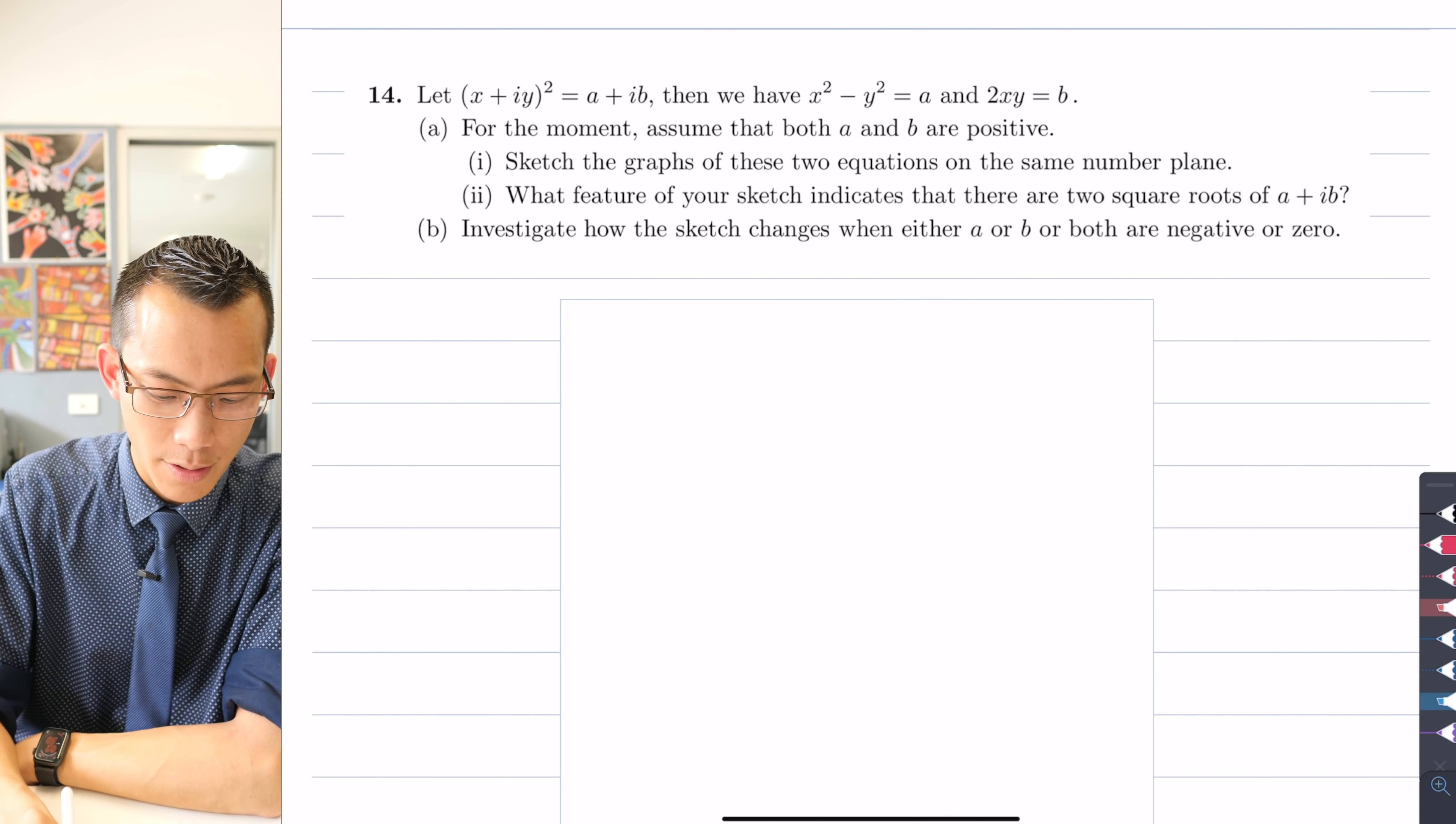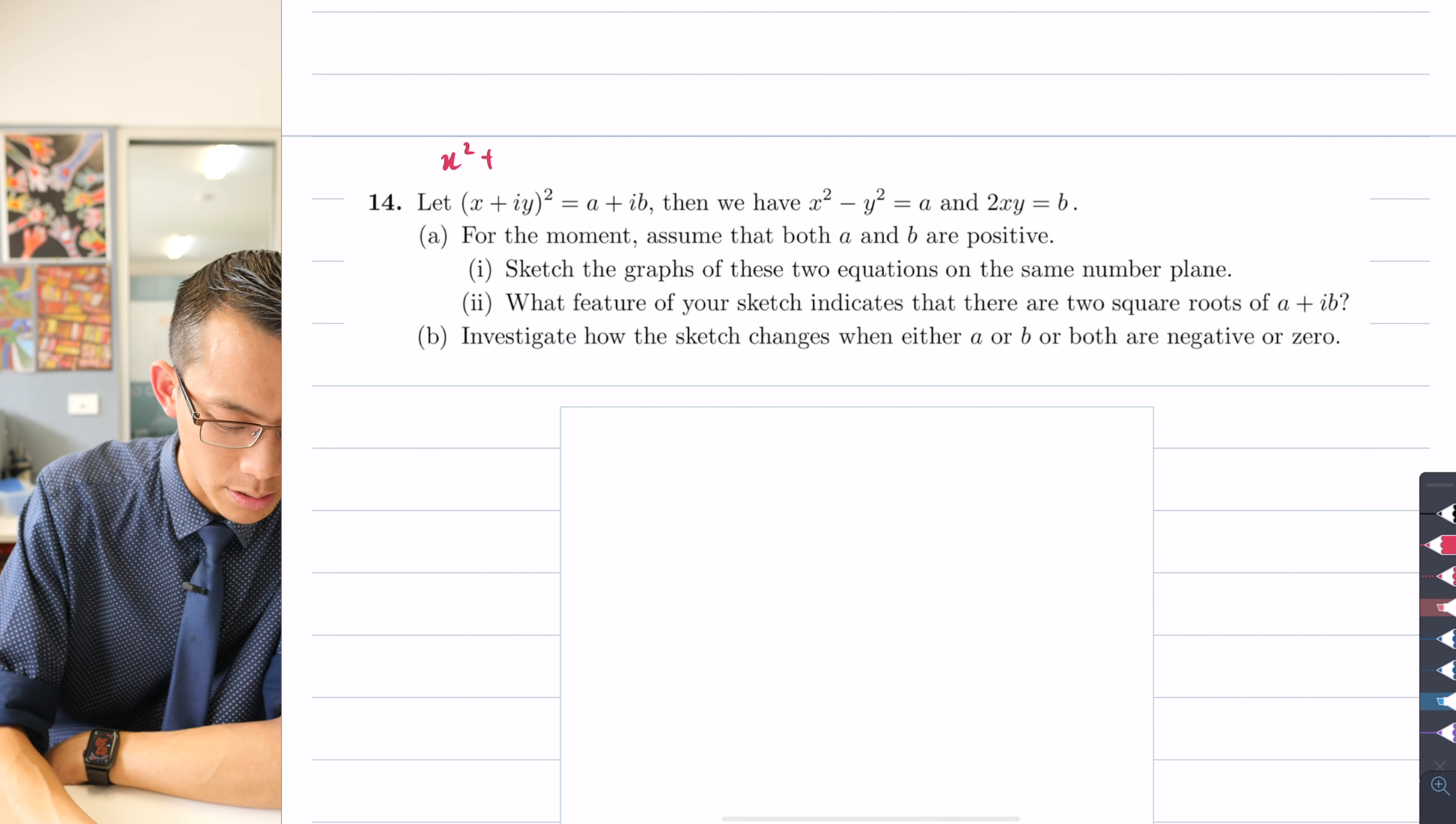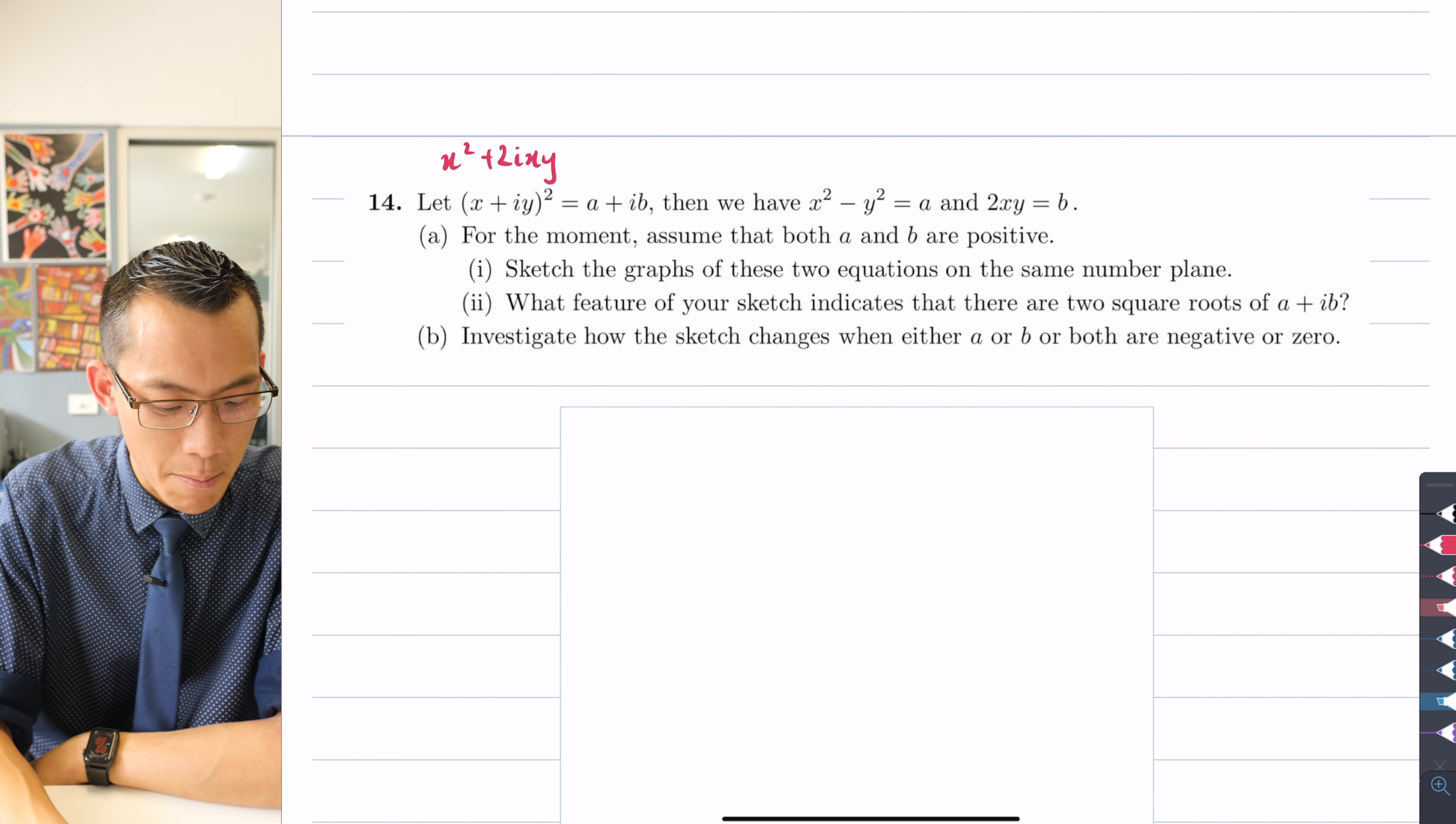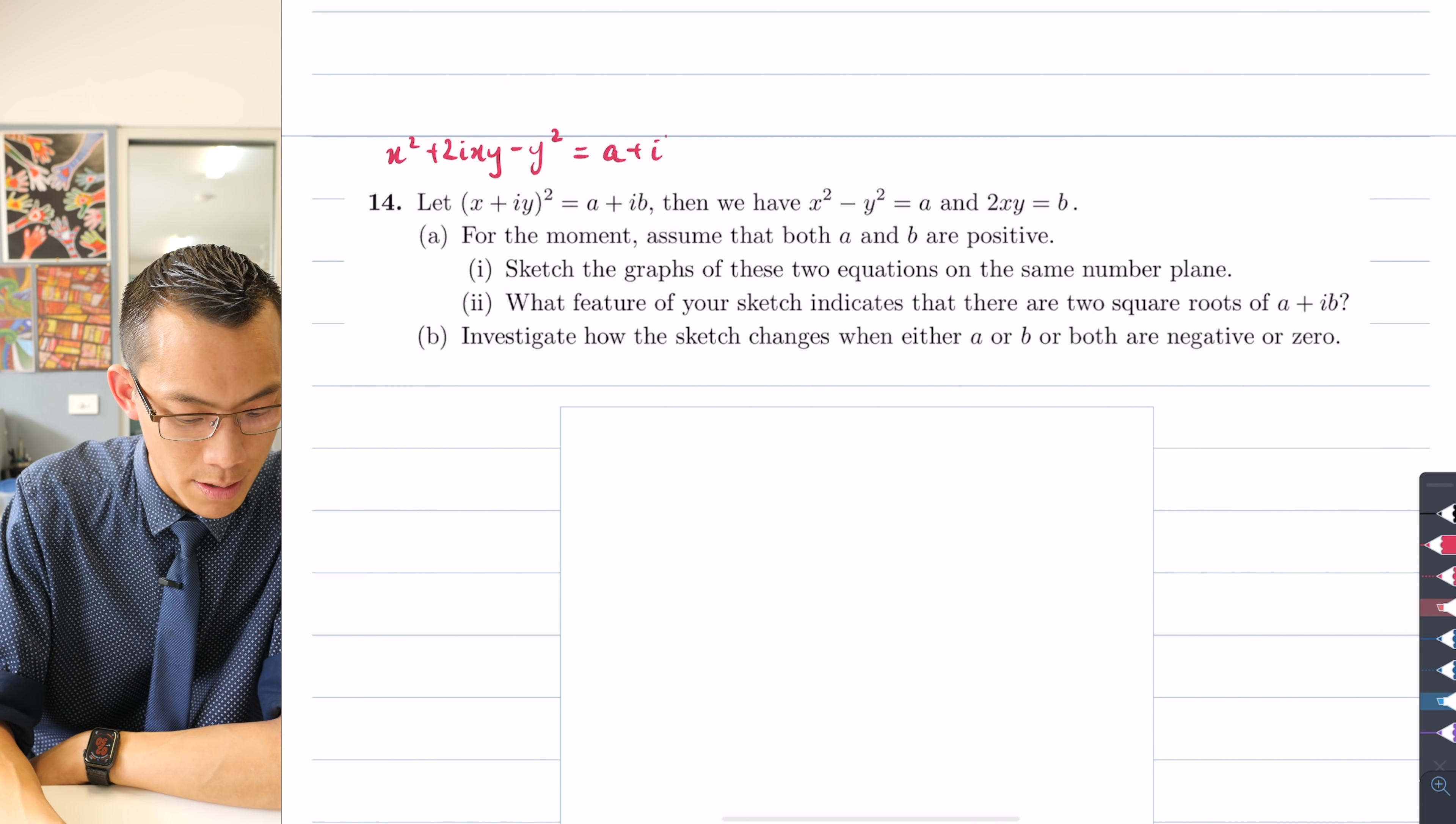When you take this and expand the left-hand side, what you'll get is x squared plus 2ixy, and then you're going to get plus i squared y squared, but i squared is just minus 1, so you get minus y squared. All of that is what you get from expanding the left-hand side, but from the right-hand side you get this.